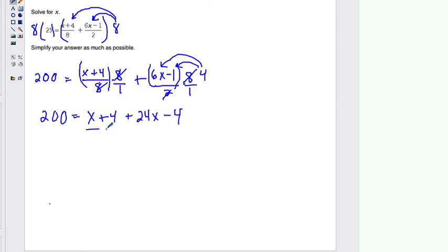So we have like terms here, this gives me 25x, and then 4 minus 4, those cancel each other out. And I divide both sides by 25 and you get x equals 8.